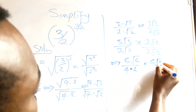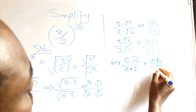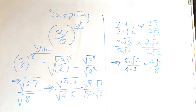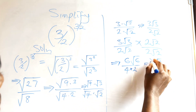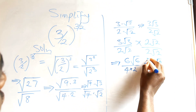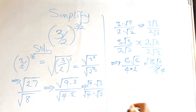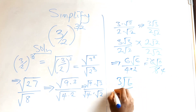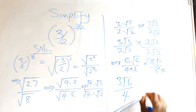Which gives us 6 root 6 over 8. We can cancel: 2 goes into 6 giving 3, and 2 goes into 8 giving 4. Which is 3 root 6 over 4. And that's your final answer.